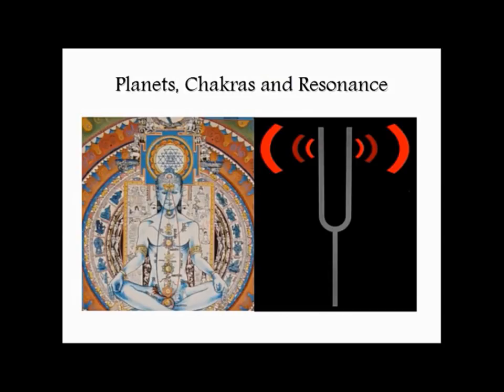Each one of those chakras is associated with certain drives and faculties — and that is the same as the planets. If you look at the planets in the solar system, they are also chakras. They are literally wheels, literally spinning vortices. And the whole solar system is a wheel.